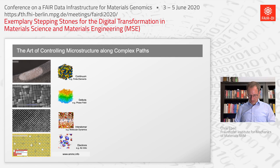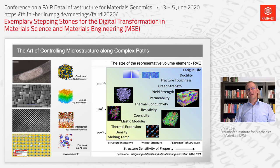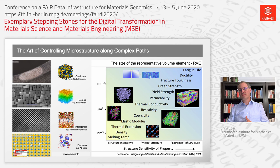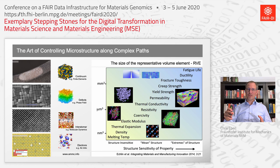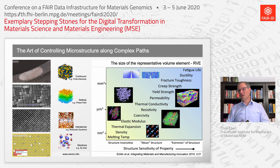If we look at material science across all the different size scales, the volume elements behave very differently depending on which property you are interested in — melting temperature, density, elastic modulus, thermal conductivity, permeability, yield strength, creep strength, fracture toughness, ductility, or fatigue life. Each depends on different size scales for a representative experiment and simulation.